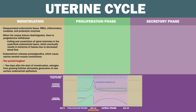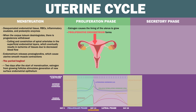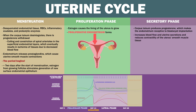Then there's the proliferation phase, so-called because estrogen causes the lining of the uterus to grow. This estrogen is secreted in increasing amounts as the ovarian follicles mature. A new layer of endometrium, called the proliferative endometrium, is formed. Finally, there is the secretory phase. The corpus luteum produces progesterone, which makes the endometrium receptive to blastocyst implantation. It does this by increasing blood flow and uterine secretions, and reducing contractility of the uterus's smooth muscle tissue.